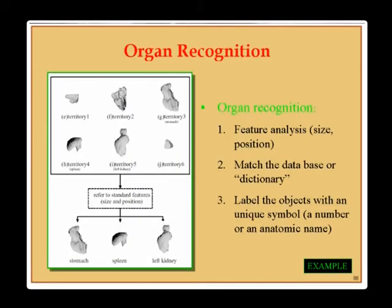There are many handbooks on this topic. Organ recognition requires feature analysis of size and position, then matching against a database or dictionary, since there is no standard organ. Atlases differ culturally — organs from Asian and Japanese populations differ from European ones. Without the appropriate atlas, false recognition can occur. Objects are then labeled with a unique symbol, number, or anatomic name.